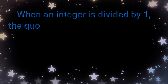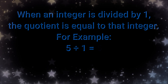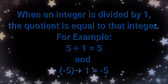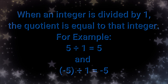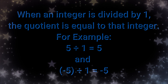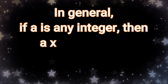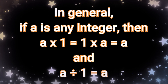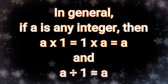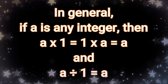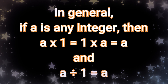When an integer is divided by 1, the quotient is equal to that integer. For example, 5 divided by 1 is equal to 5, or negative 5 divided by 1 is equal to negative 5. In general, if a is any integer, then a times 1 is equal to 1 times a, which is equal to a. And a divided by 1 is also equal to a.